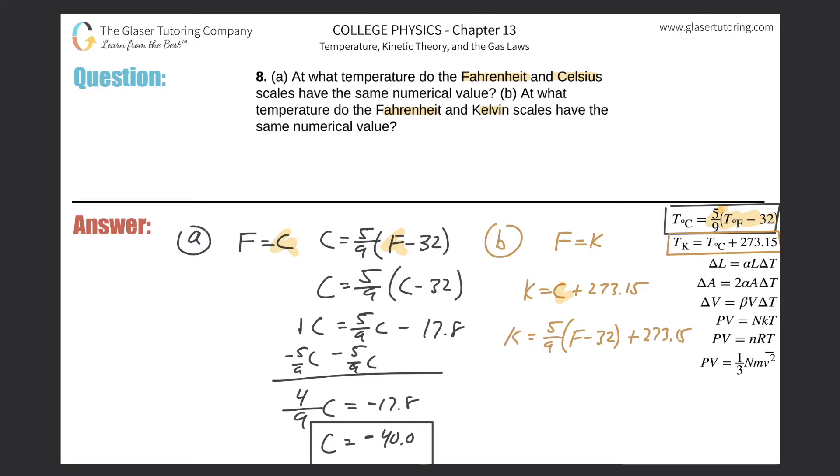So you can choose what you want to plug in for what, doesn't matter. I'm going to choose to plug in K for F. So this is five ninths then times K minus 32, plus then the 273.15. Now just do some algebra.